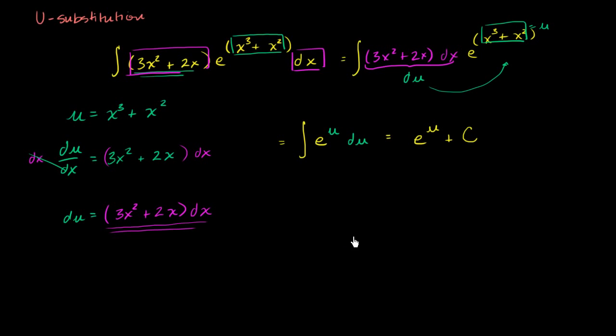And now to get it in terms of x, we just have to unsubstitute the u. We know what u is equal to. So we could say that this is going to be equal to e. Instead of writing u, we could say u is x to the third plus x squared. And then we have our plus c. And we are done.